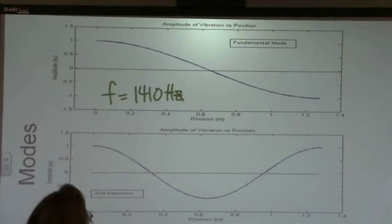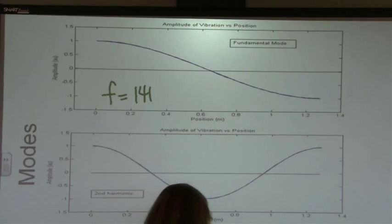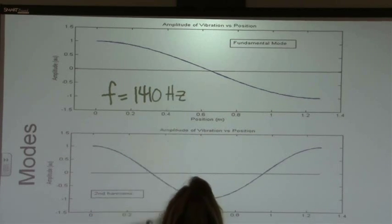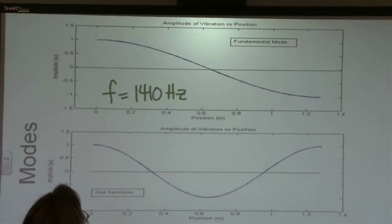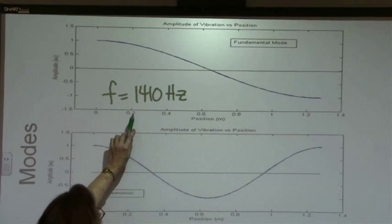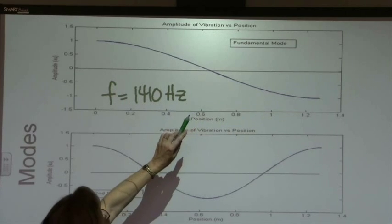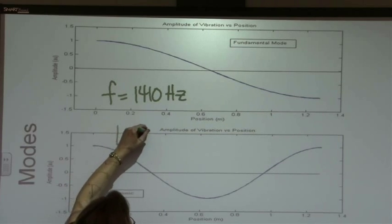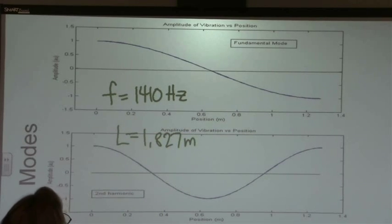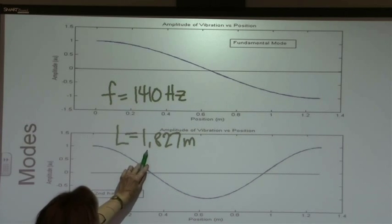And we can see what the wavelength. So the frequency of this mode right here is 1410 hertz, and we know that the rod is actually a length of 1.827 meters long. And so a half a wavelength is equal to 1.827 meters.